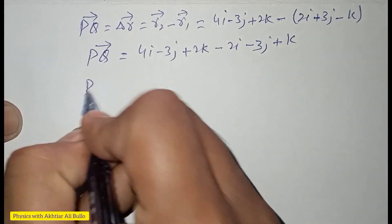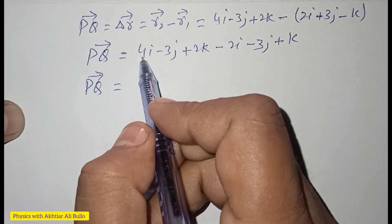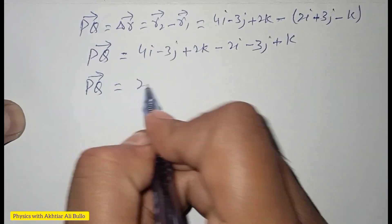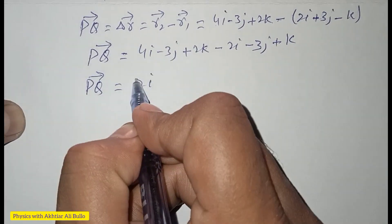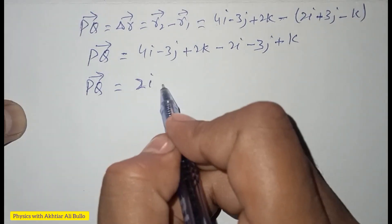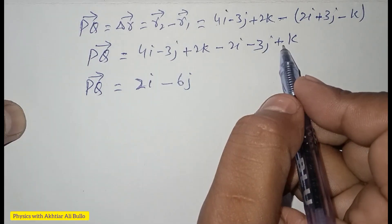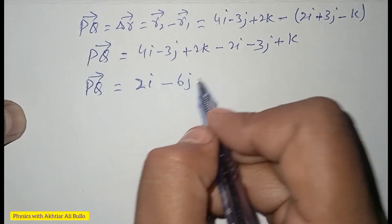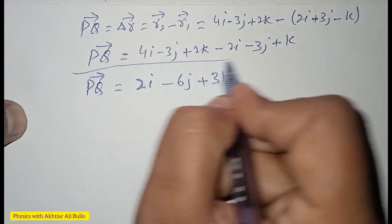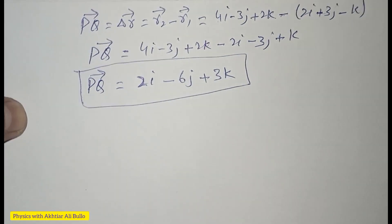Combining like terms: 4i - 2i = 2i, -3j - 3j = -6j, and 2k + k = 3k. So we have obtained vector PQ = 2i - 6j + 3k. Now we will calculate its magnitude.